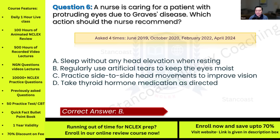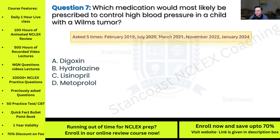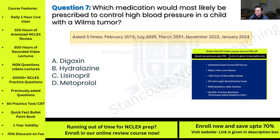Question seven: Which medication would most likely be prescribed to control high blood pressure in a child with a Wilms' tumor? This has been asked five times. Options: A) digoxin; B) hydralazine; C) lisinopril; D) metoprolol.